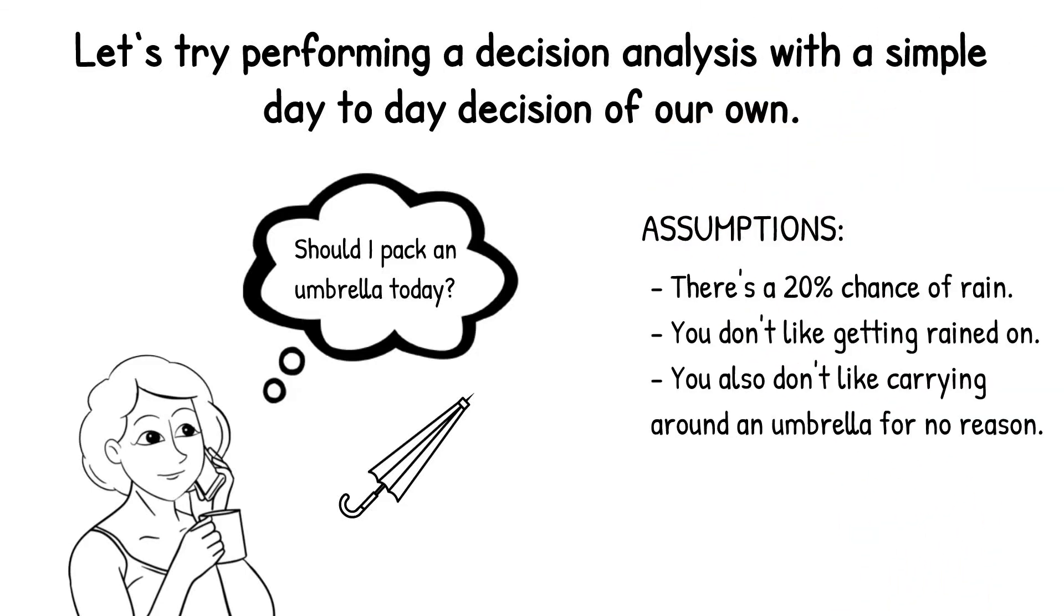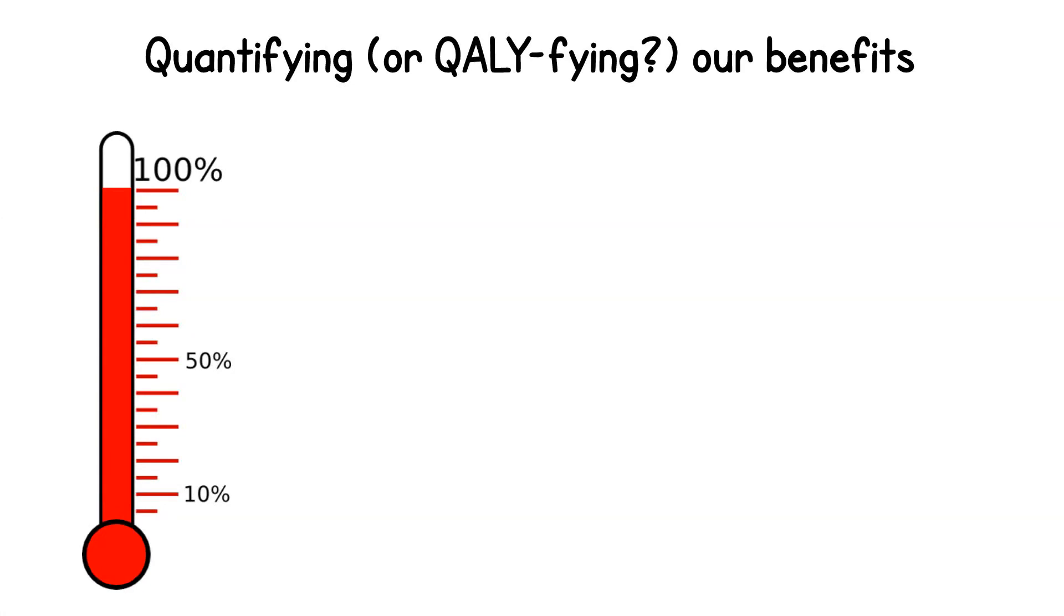I'll start by setting the scene here with a few assumptions. 1. There's a 20% chance of rain. 2. We don't like getting rained on. 3. We also don't like carrying around an umbrella for no reason. And as we think of the different endgames in this scenario, of bringing versus not bringing an umbrella, and it raining or not raining, they might look like this.